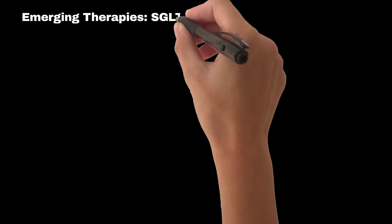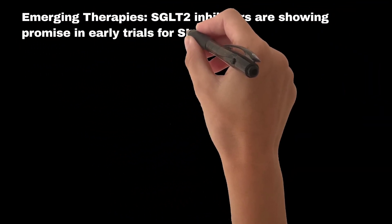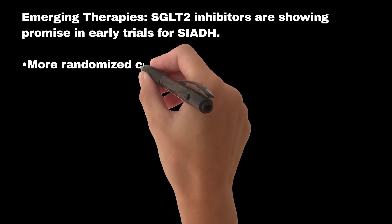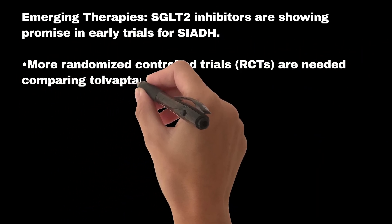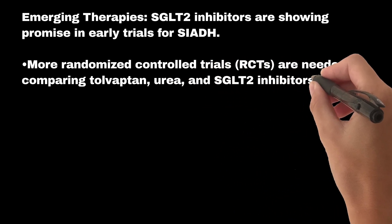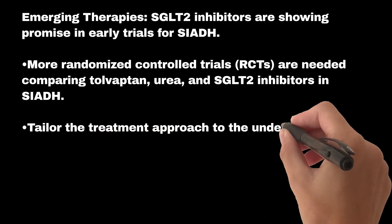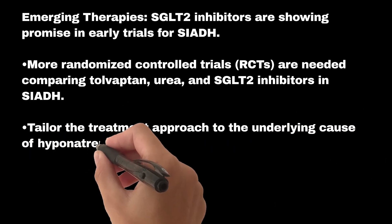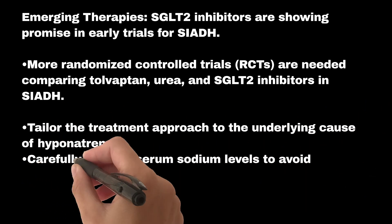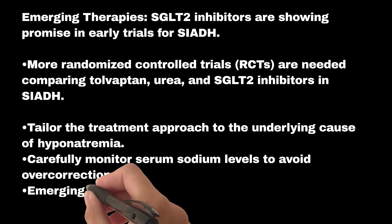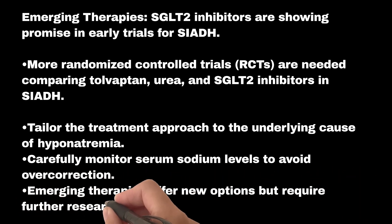Emerging therapies: SGLT2 inhibitors are showing promise in early trials for SIADH. More randomized controlled trials (RCTs) are needed comparing tolvaptan, urea, and SGLT2 inhibitors in SIADH. In conclusion, tailor the treatment approach to the underlying cause of hyponatremia, carefully monitor serum sodium levels to avoid overcorrection, and note that emerging therapies offer new options but require further research.